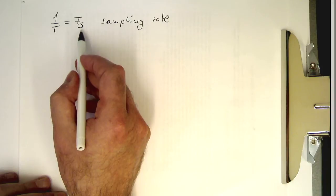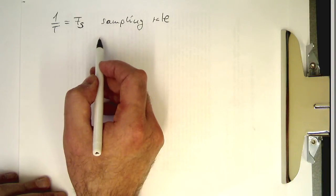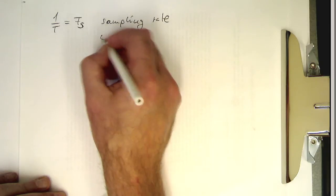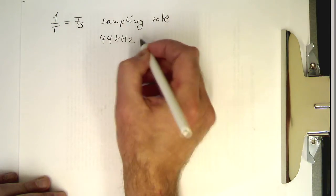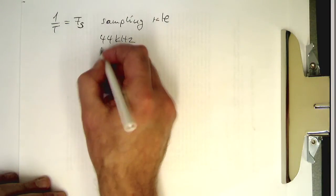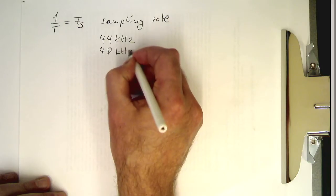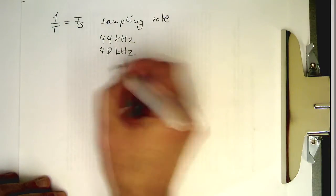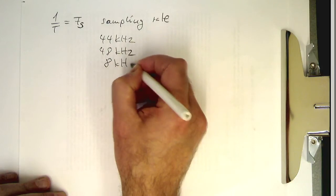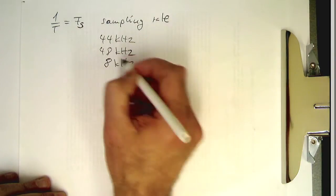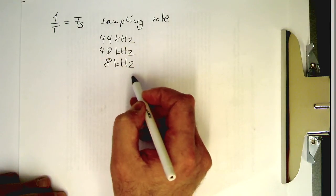So Fs is the rate the analog signal is looked at. Typical sampling rates are for example 44 kilohertz, that's for CD, or 48 kilohertz, that's usually the broadcast sampling rate. And if you have some window sounds or notification sounds, they're very often only at 8 kilohertz.